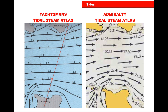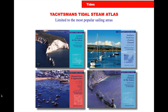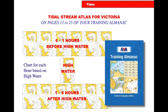Here's a Yachtsman's one and an Admiralty one — it's the same information, just laid out slightly differently. There's a particular one called Winning Tides, which is really useful if you're racing around the Isle of Wight, and it shows the tides in intricate detail every half an hour around the Isle of Wight. The tidal stream atlas in your Training Almanac runs for 6 to 1 hours before high water, high water, and 1 to 6 hours after high water.